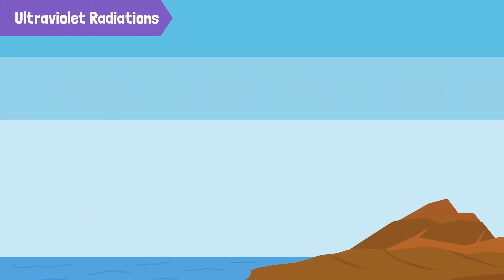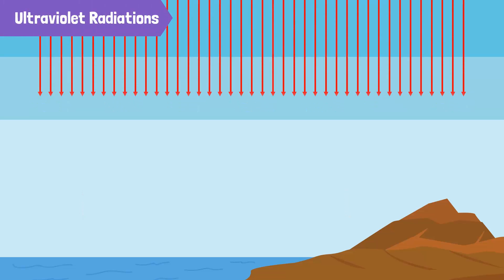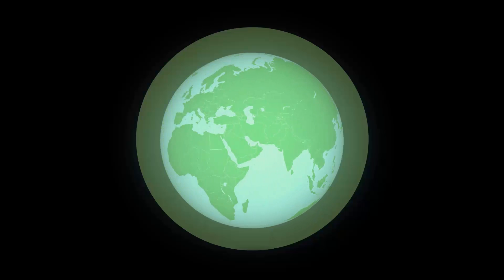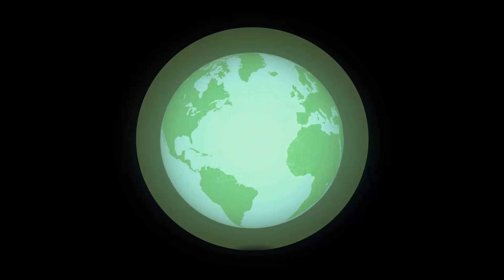The ultraviolet radiations of the sun can be very harmful for us. It can cause skin cancer, blindness, a weak immune system, and many other diseases. The ozone layer protects us from these harmful ultraviolet rays by absorbing about 98% of them.